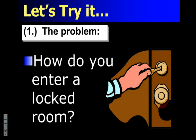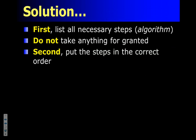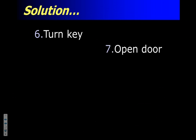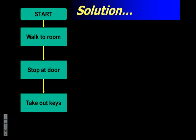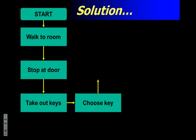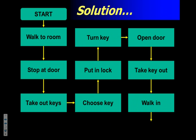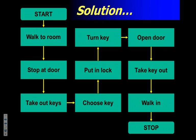Let's do the world's simplest flowchart. The problem: how do I get into a locked room? The steps are: start, walk to the room, stop at the door, take out the keys, choose a key, put it in the lock, turn the key, open the door, take the key out, walk in, and done. This is like a board game — you just move step to step to step. It's all just actions moving from one to another. Though 'choose a key' could actually be more of a decision.